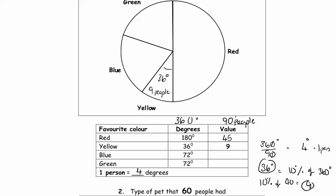To figure out blue: yellow is half of blue, so 36 times 2 is 72 degrees, and 9 times 2 is 18 people. Another approach: 45 plus 9 is 54, so 90 minus 54 is 36 remaining, divided between green and blue. Green has the same degrees as blue, so it's also 18 people. Green is exactly the same degree, so it's the same number of people.